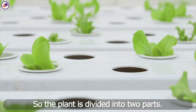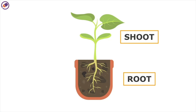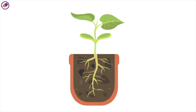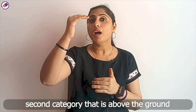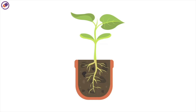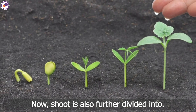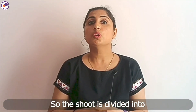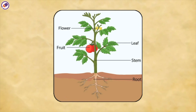The plant is divided into two parts: root and shoot. The root is under the ground and we cannot see it, but the second category, that is shoot, is above the ground and visible to all of us. Now shoot is further divided into flowers, stems, and leaves.